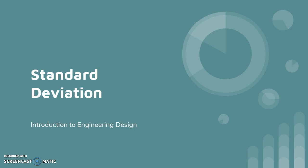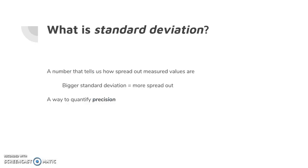This is for Introduction to Engineering Design. A basic definition of standard deviation is it's a number that tells us how spread out our measured values are. The bigger this number is when we do these calculations, the more spread out the data is. In other words, it's a way to quantify precision, since we've been talking about precision and accuracy in our classes.